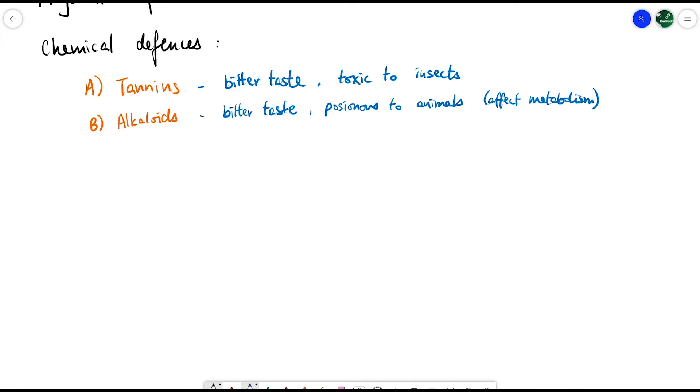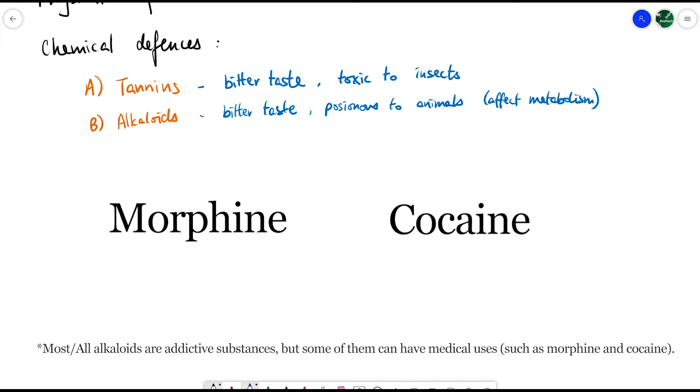Other examples are morphine and cocaine. Morphine is a painkiller, though not the first choice due to strong side effects and addiction potential. Cocaine is a drug with similar concerns.